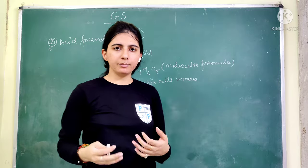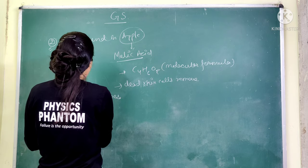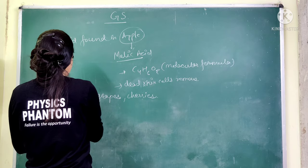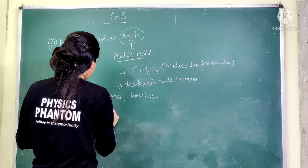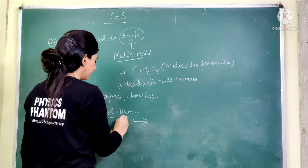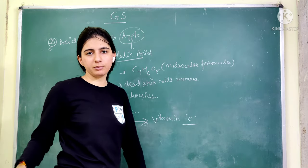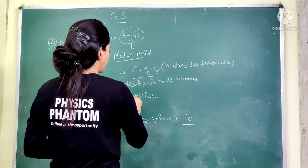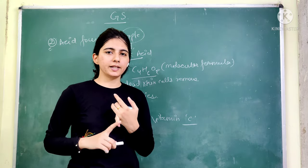Malic acid is found in many fruits and vegetables. These include grapes, cherries, strawberries, carrots, and broccoli. It is also used in medicines, for removing dead skin cells, and as a flavoring agent.